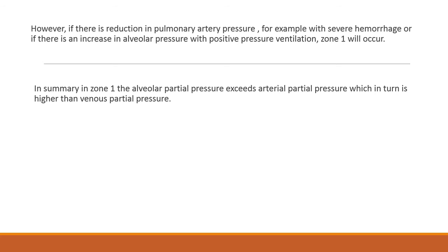When will a reduction in pulmonary artery pressure happen? It can happen during severe hemorrhage, when the blood volume has been reduced and there is not enough pressure to overcome the alveolar pressure. Zone 1 can also occur if you are giving positive pressure ventilation, thereby increasing the alveolar pressure. In summary, in Zone 1, the alveolar partial pressure exceeds the arterial partial pressure, which in turn is higher than the venous partial pressure.